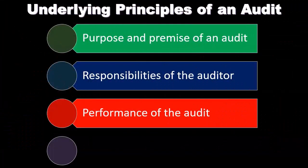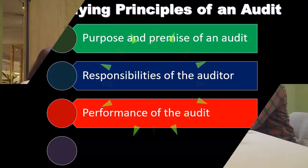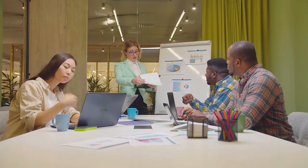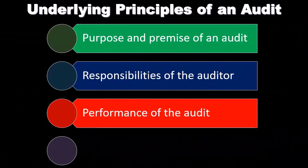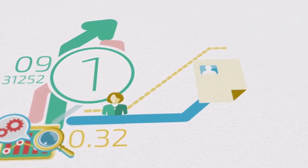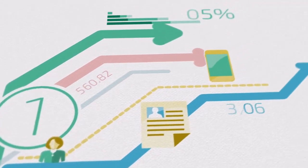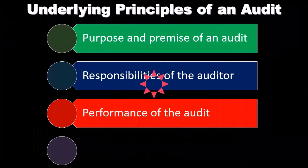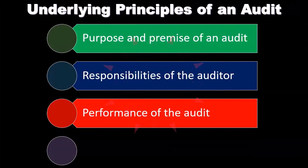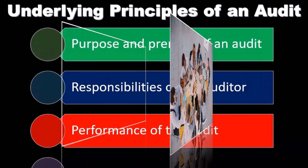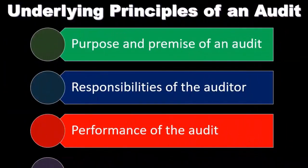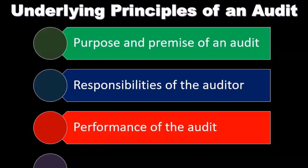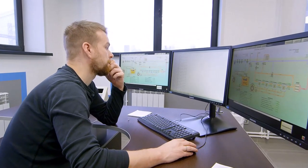Identifies and assesses risks of material misstatement, whether due to fraud or error based on an understanding of the entity and its environment, including the entity's internal controls. The auditor is unable to obtain sufficient appropriate audit evidence about whether material misstatements exist through designing and implementing appropriate responses to the assessed risks. The auditor is unable to obtain absolute assurance that the financial statements are free from material misstatements because of inherent limitations, which arise from the nature of financial reporting, the nature of audit procedures and the need for the audit to be conducted within a reasonable period of time and so as to achieve a balance between benefit and cost.